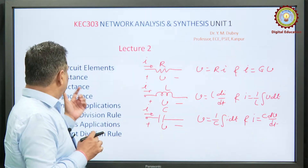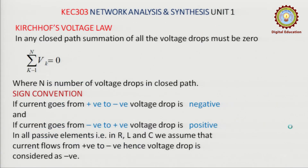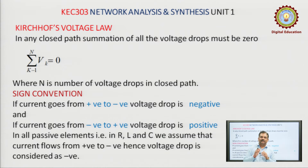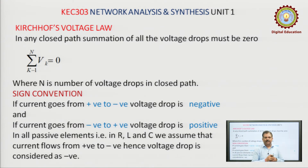Coming to the second part — Kirchhoff's voltage law. Kirchhoff's voltage law can be applied in a closed loop only. In any closed path, the summation of all voltage drops must be zero. This is the statement of Kirchhoff's voltage law: summation of V_k equals zero, where k ranges from 1 to n. If there are n voltage drops in a closed path, their summation must be zero.